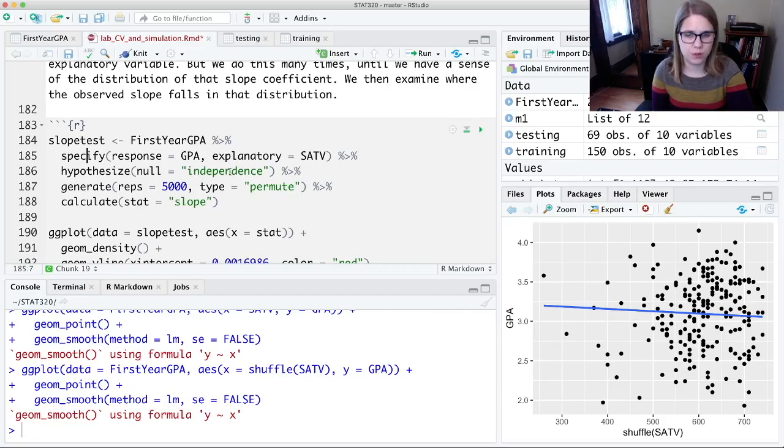There's no relationship between them. And then we're going to generate 5,000 reps of type equal permute, so we're going to permute one of the variables. And then we're going to calculate a stat, which is the slope.